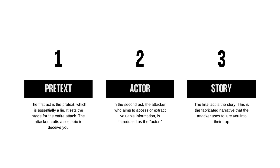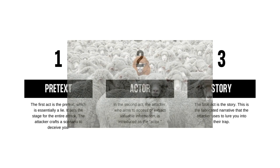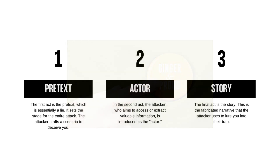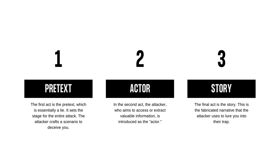Phishing attacks are often built upon a three-act foundation. The first act is the pretext, which is essentially a lie. It sets the stage for the entire attack — the attacker crafts a scenario to deceive you. The second act introduces the actor, who is none other than the attacker themselves. Their objective is to gain access or extract valuable information from you.